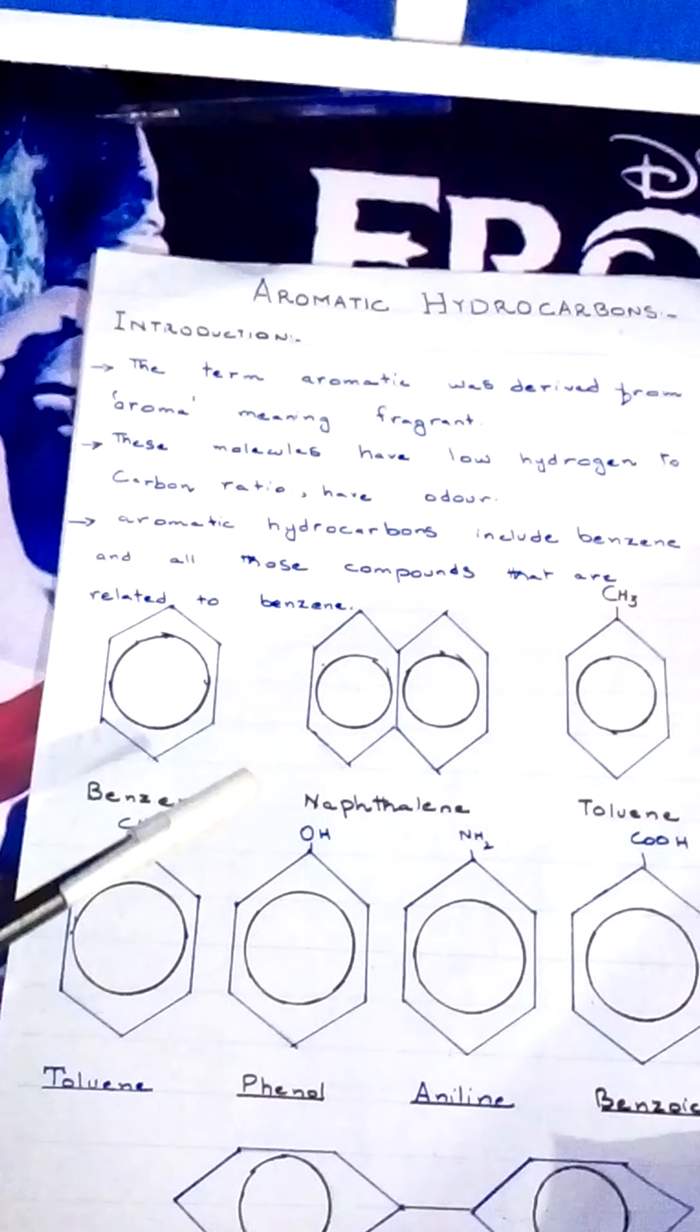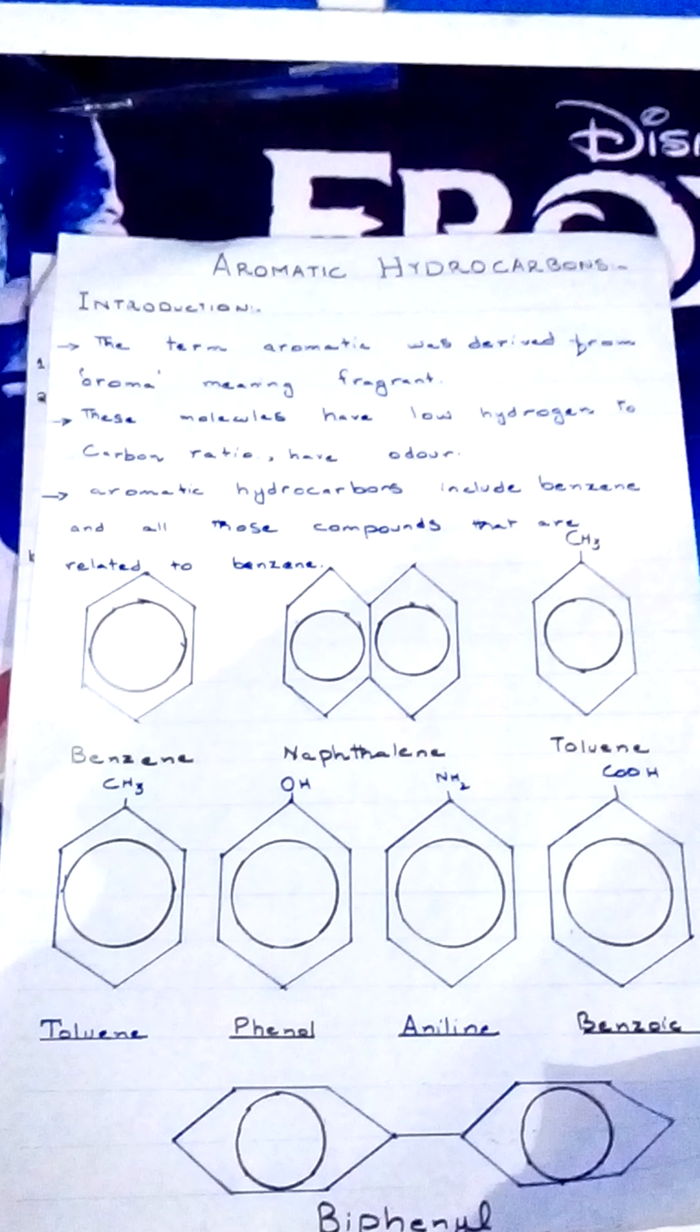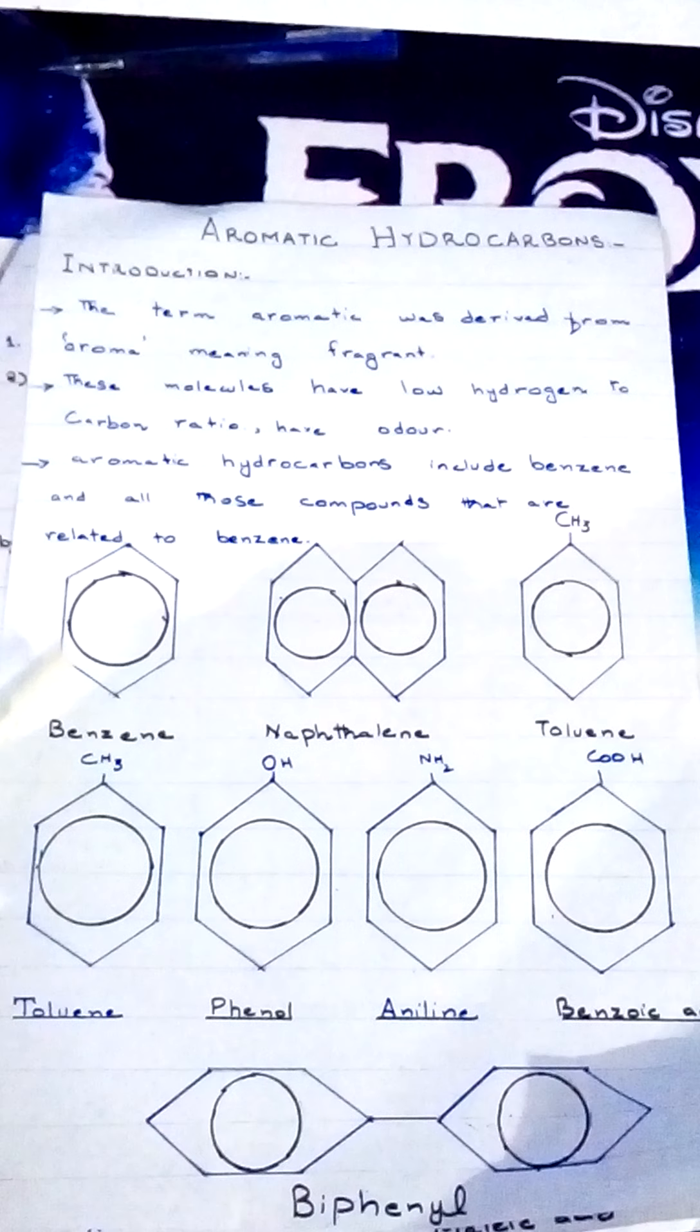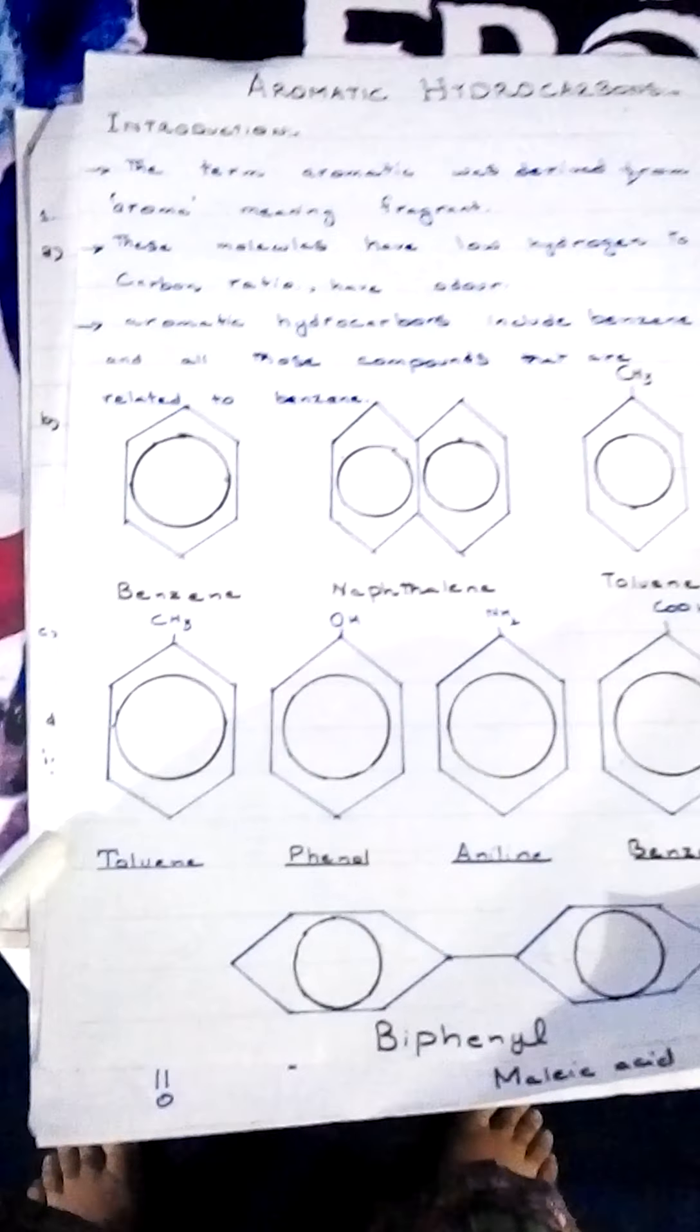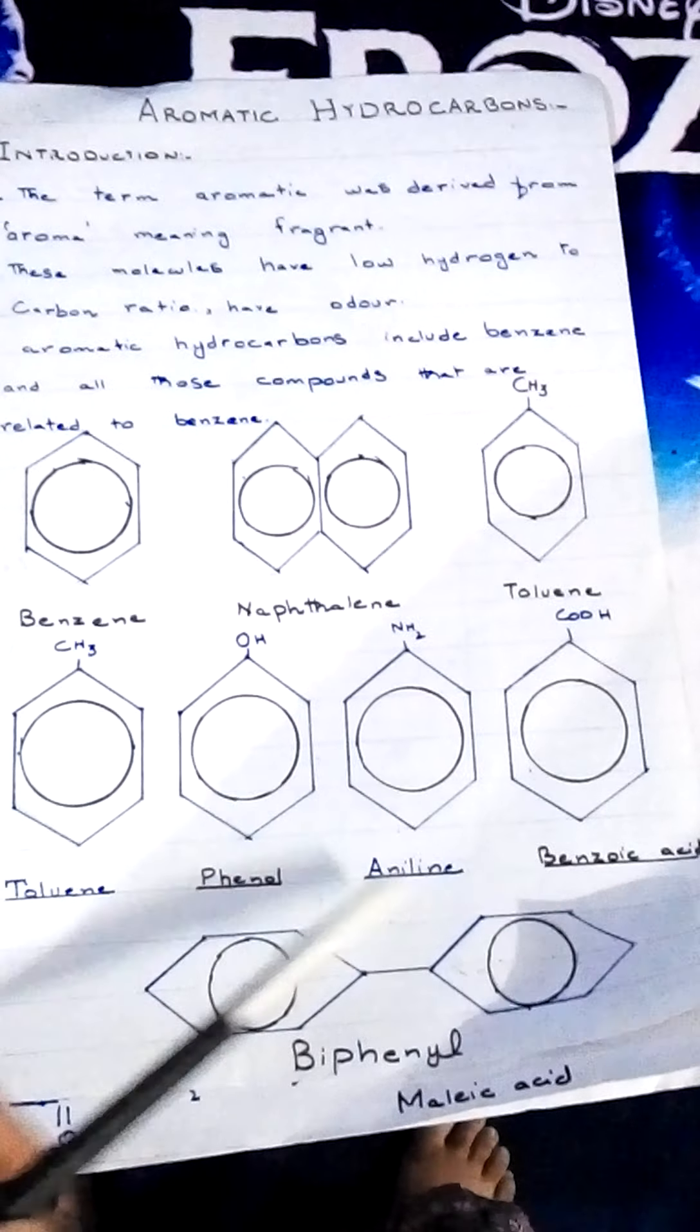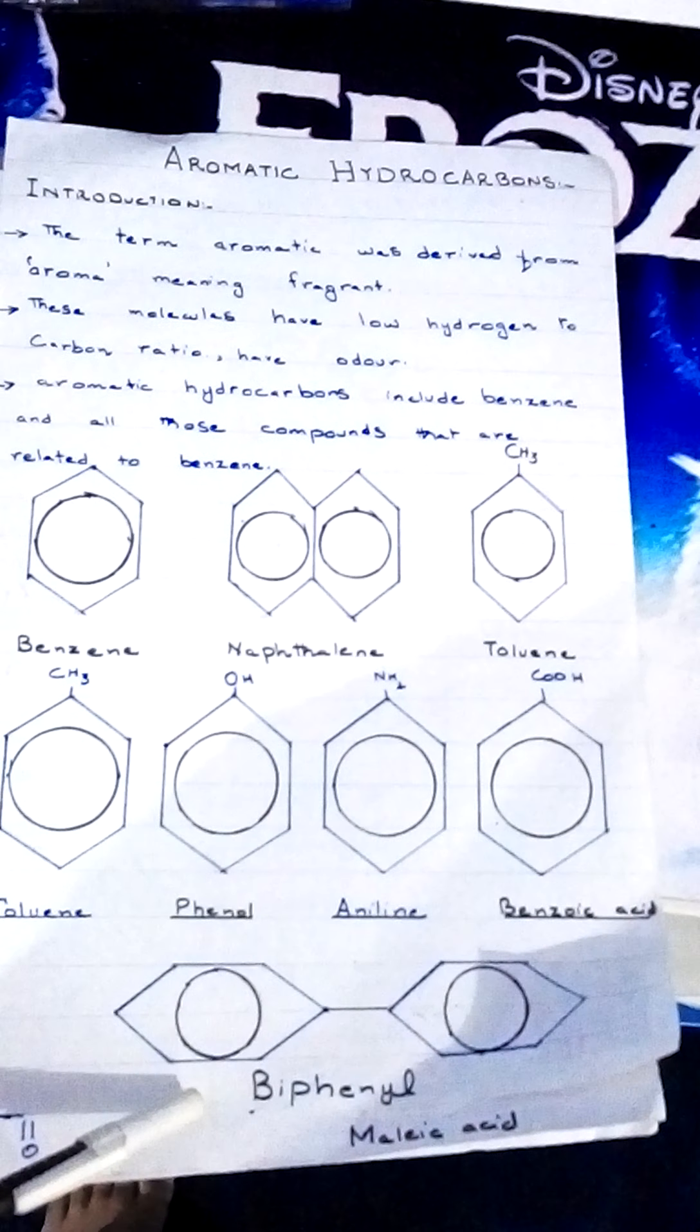Aromatic hydrocarbons include benzene and all those compounds related to benzene. This is the basic structure of benzene. The formula is C6H6: 6 carbon atoms attached with 6 hydrogen atoms, with 3 alternate double and single bonds. This is the structure of naphthalene. This is toluene, when a methyl group is attached to benzene. If hydroxyl group is attached, it's called phenol. If NH2 group is attached, aniline. If carboxyl group is attached, benzoic acid. And when two benzene rings are attached in this way, this is the structure of biphenyl.